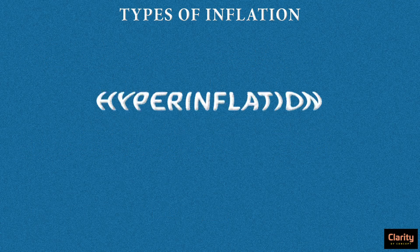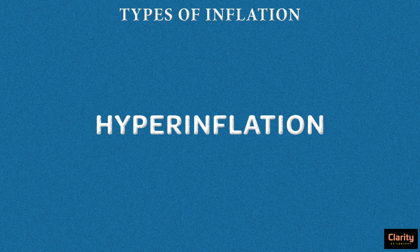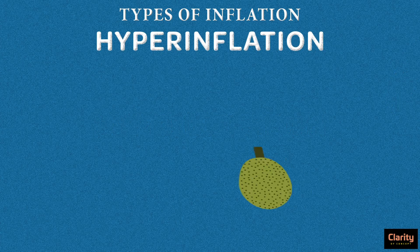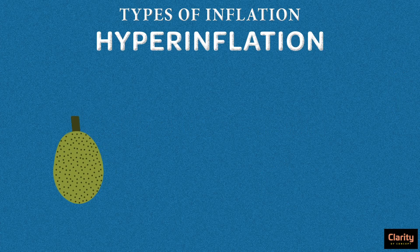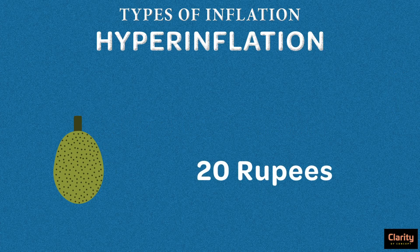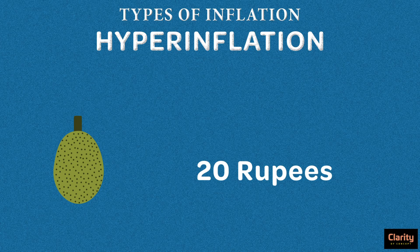The third category is hyperinflation — this is the worst type of inflation. Imagine you want to buy a jackfruit. You go to the market and it is just 20 rupees. You buy it, come home, and eat a full jackfruit. Later that night, hyperinflation starts in your country.